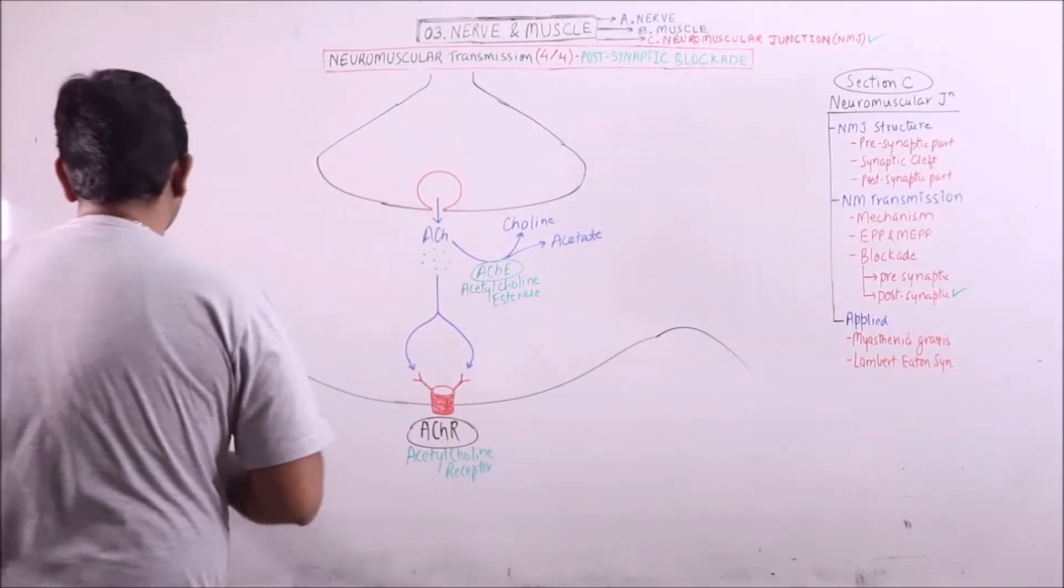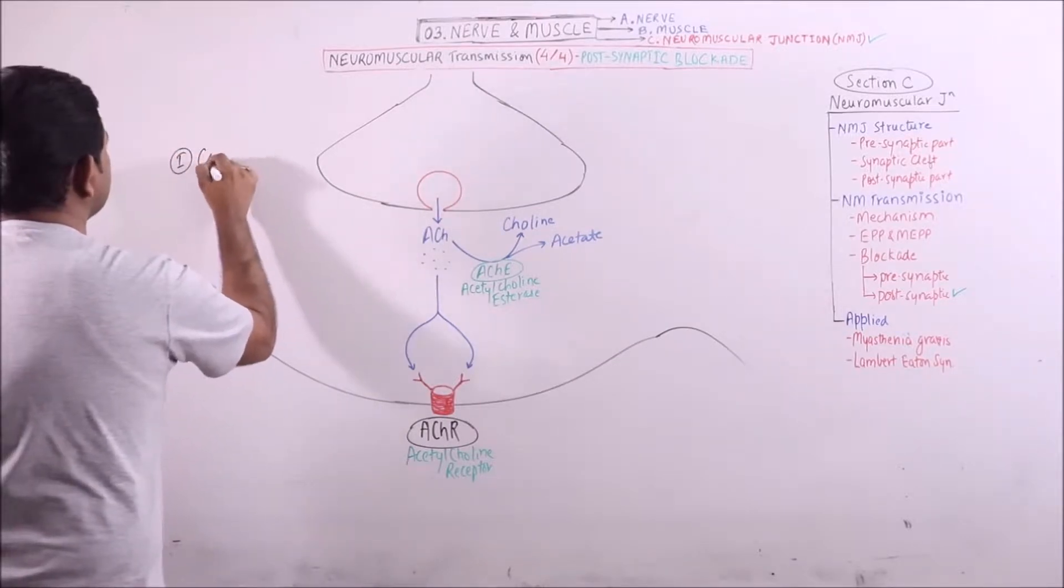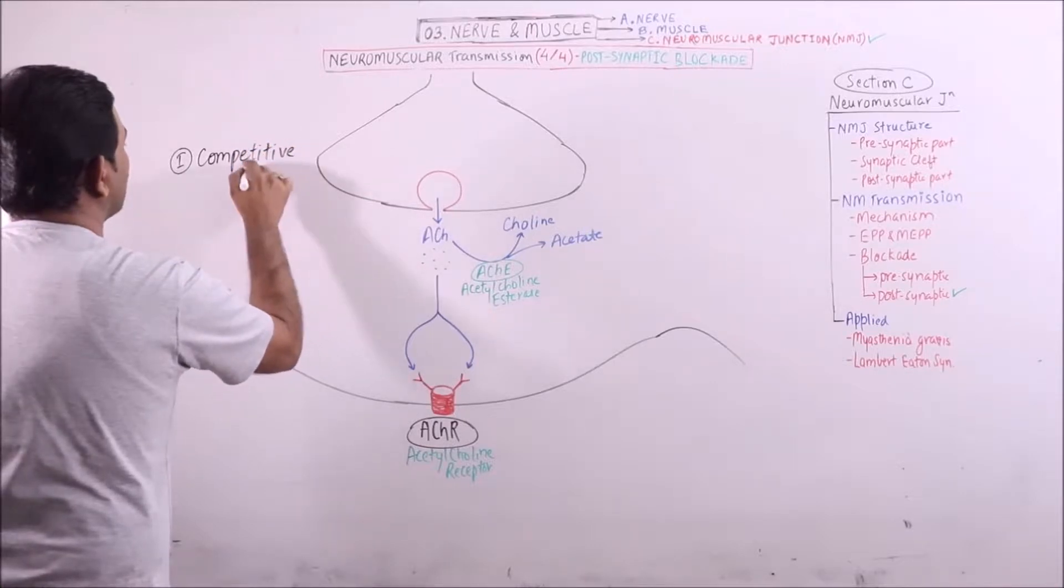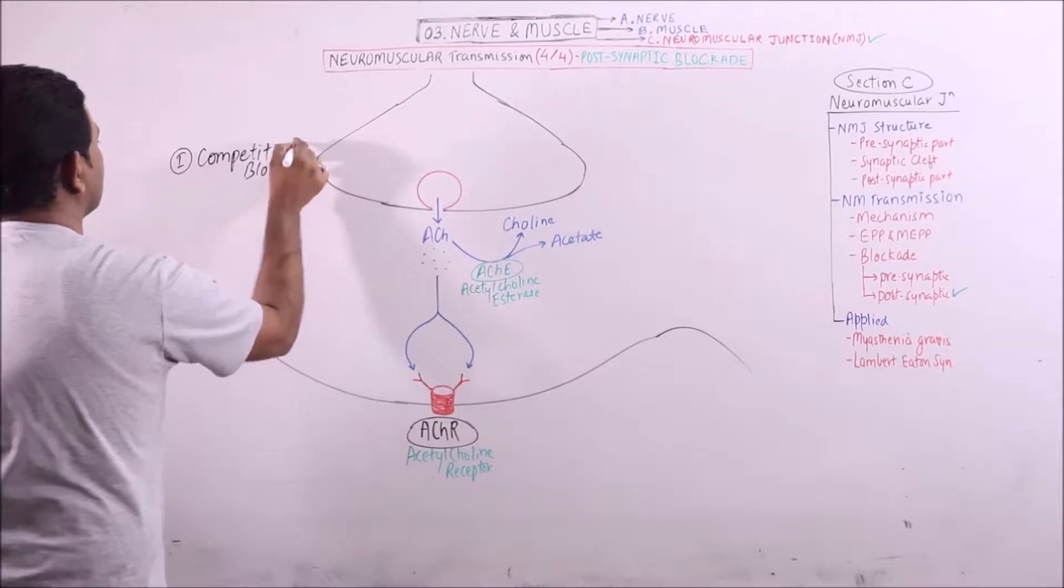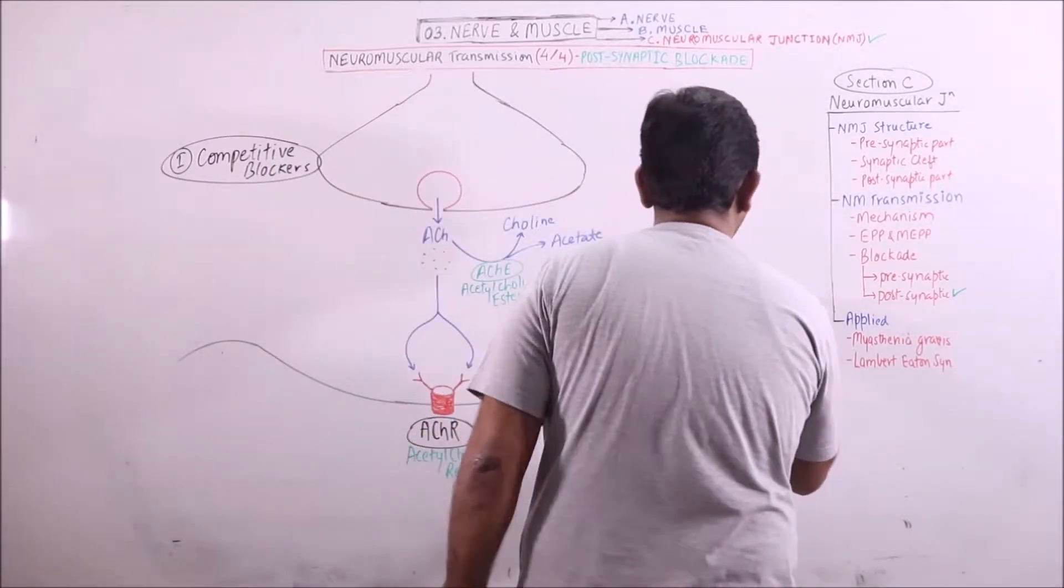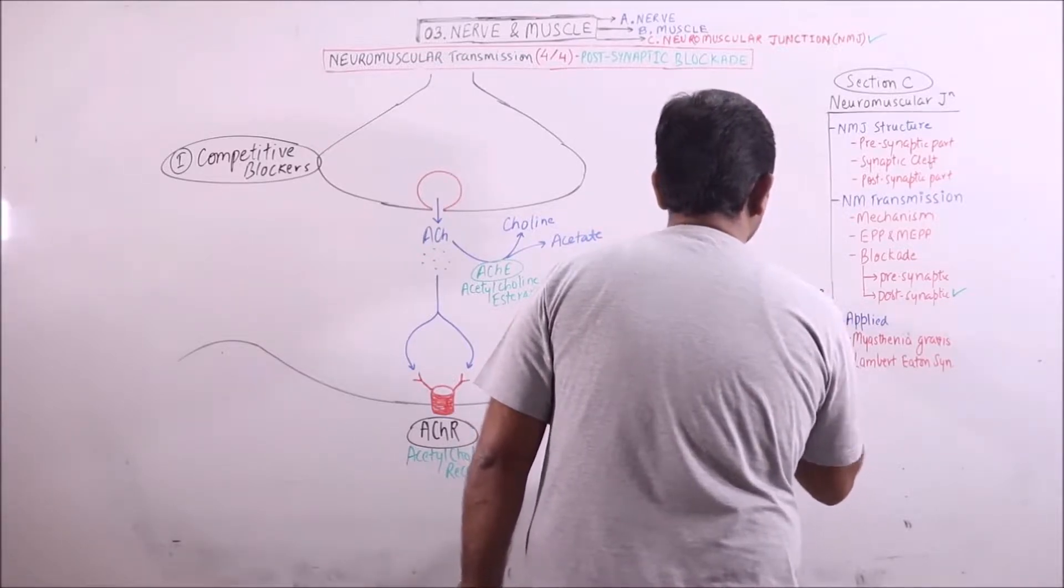The substances causing post-synaptic blockage are divided into two categories: first is competitive blockers, and another category is depolarizing blockers.